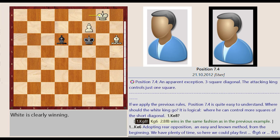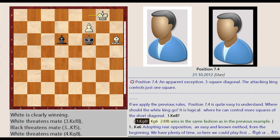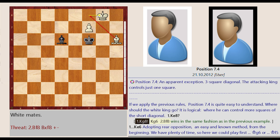Position 7.4. An apparent exception. Three square diagonal. The attacking king controls just one square. If we apply the previous rules, position 7.4 is quite easy to understand. Where should the White king go? It is logical.